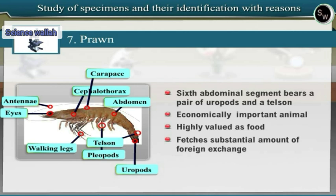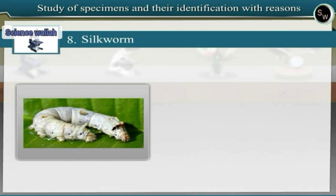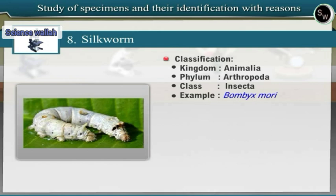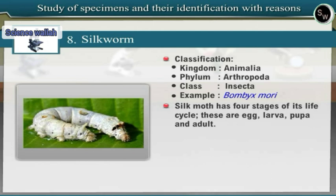Specimen 8: Silkworm. Observe the preserved specimens of adult silk moth, caterpillar and cocoon. Silk moth belongs to the genus Bombyx mori, classified under class Insecta of Phylum Arthropoda in Kingdom Animalia. Silk moth has jointed appendages and is included under Phylum Arthropoda. Since there are three pairs of walking legs, silk moth belongs to class Insecta. Silk moth has four stages in its life cycle: egg, larva, pupa and adult. Its larva is called a silkworm.